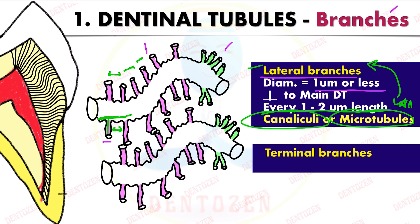These microtubules communicate with branches from adjacent tubules, forming a network between neighboring dentinal tubules. The terminal branches are more in the root portion compared to the crown portion — so they are more in root dentine compared to coronal dentine.